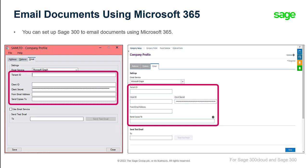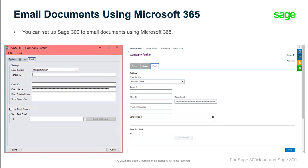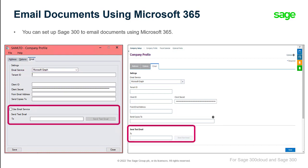Enter the from email address. If you choose to receive copies of emails that you send to customers or vendors, you can enter the email address where copies should be sent. Finally, to send a test email, specify a test email address, then click the Send Test Email button.